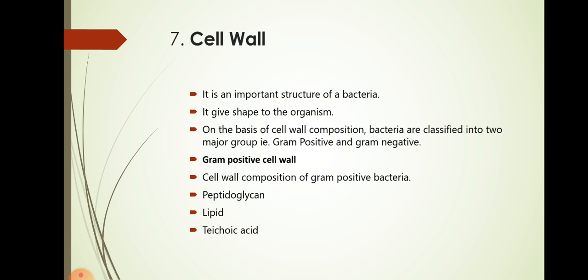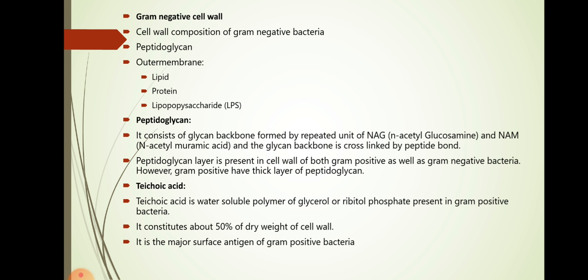Moving on to the internal structures of the bacteria. Cell wall is an important structure of bacteria. It gives shape to the organism. On the basis of cell wall composition, bacteria are classified into two major groups namely gram-positive bacteria and gram-negative bacteria. Gram-positive cell wall consists of peptidoglycan, lipids and teichoic acid. While gram-negative bacteria is composed of peptidoglycan, outer membrane, lipids, proteins and lipopolysaccharides.